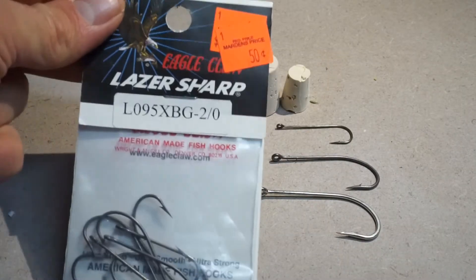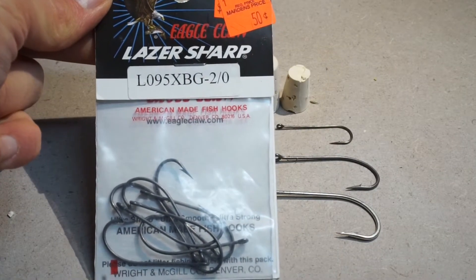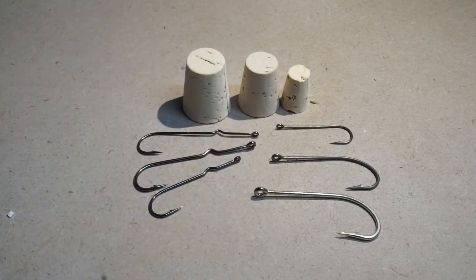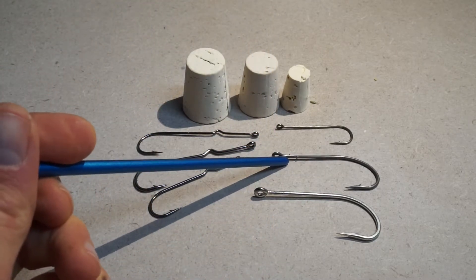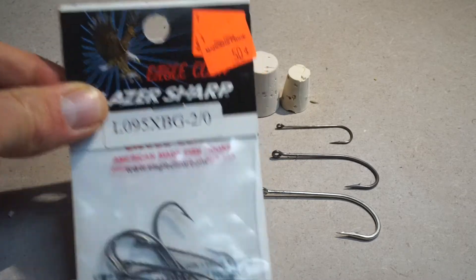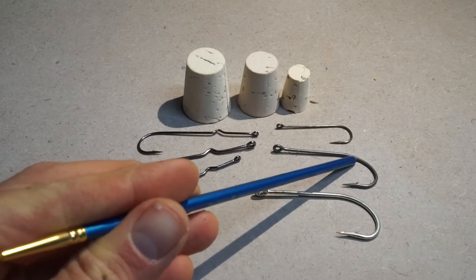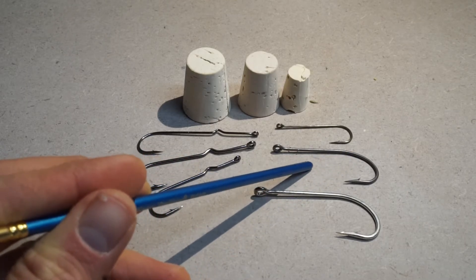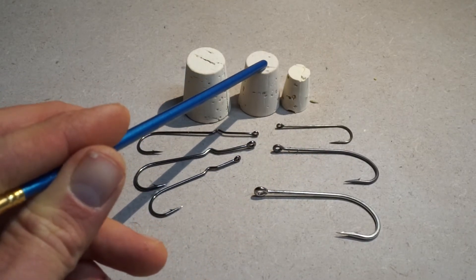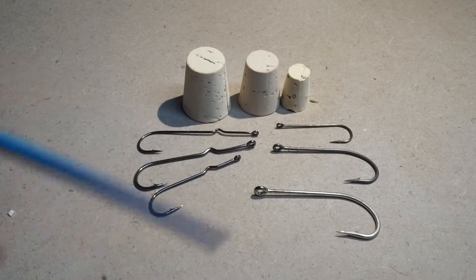The next hook down are these Eagle Claw XBG hooks. They have these little barbs on them. Again, I don't care. They were discounted. They were 50 cents. I'm sure you could find deals like this in places like eBay. I would look for long shank hooks like this. And these work great for the size six poppers right here.